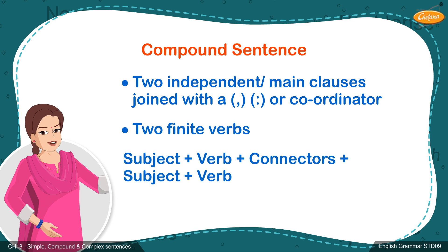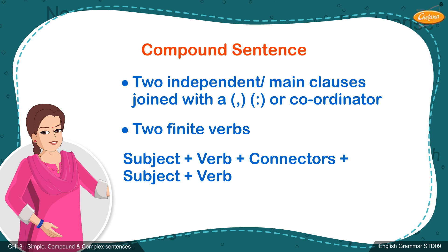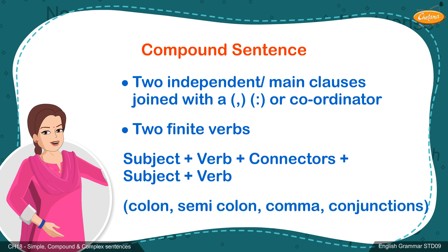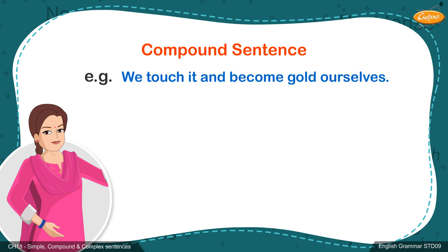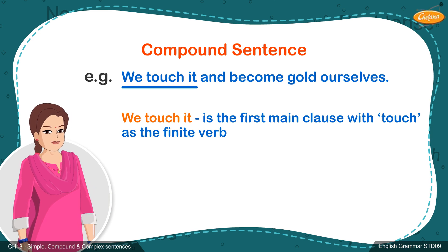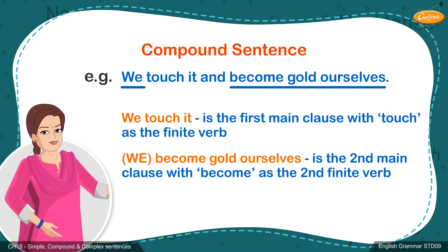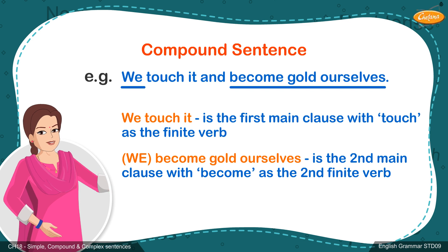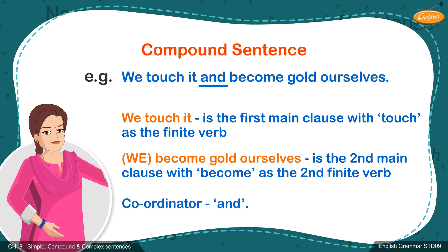That is: subject plus verb plus connectors plus subject plus verb. Connectors can be colon, semicolon, comma, or conjunctions. In the example given on the screen: 'We touch it and become gold ourselves.' Here, 'We touch it' is the first main clause with touch as the finite verb. 'We become gold ourselves' is the second main clause with become as the second finite verb. These two main clauses have been joined with the help of the coordinator AND.